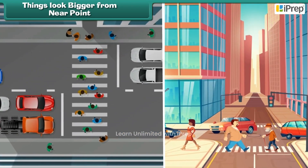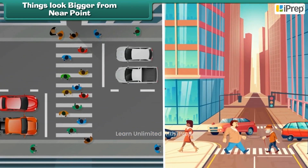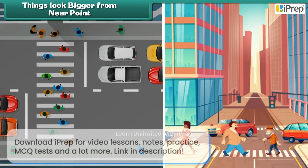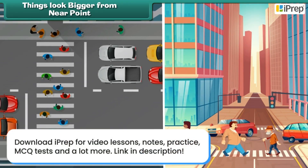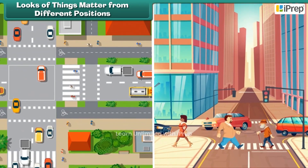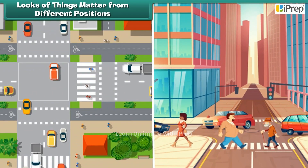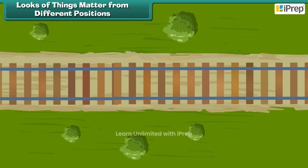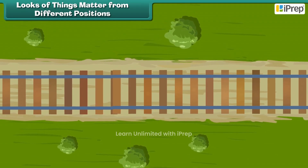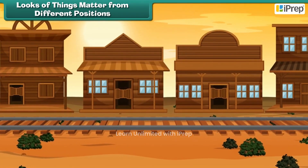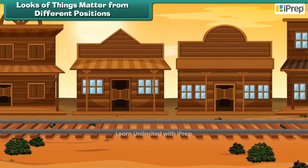Gappu understands how things look differently in shape and size from different views and distances. Things look so different when you look at them from the top and the side. The view of a railway track from above will look like this, and the view from the side will look like this.